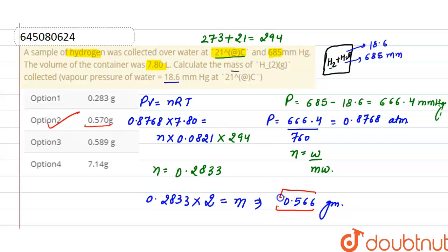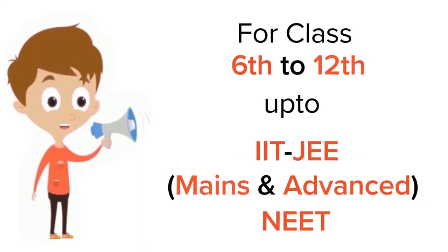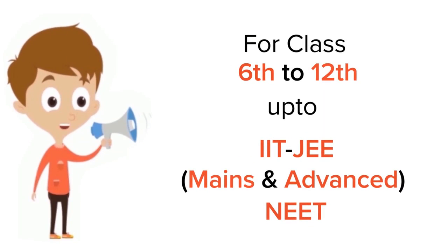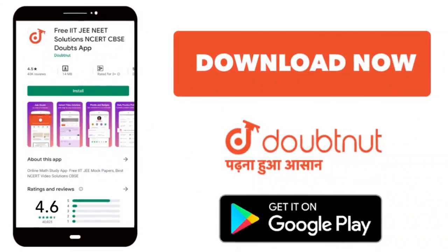So correct option here is option 2. For class 6th to 12th, IIT-JEE and NEET level, trusted by more than 5 crore students. Download Doubtnet.